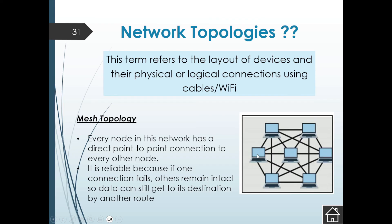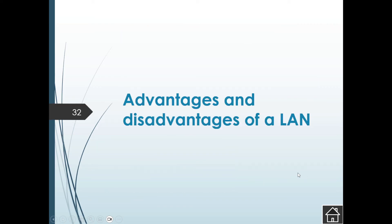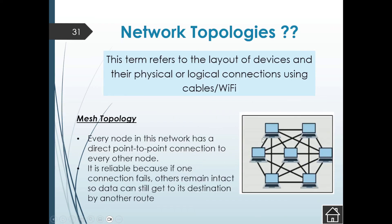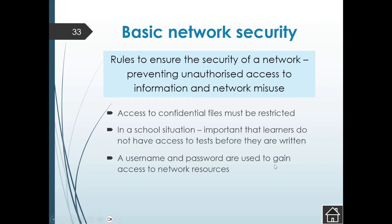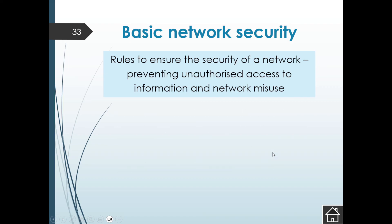The mesh topology means every node — every machine — in the network has a direct point-to-point connection to every other node. It is reliable because if one connection fails the data can still reach its destination by another route. These are the four topologies with their respective advantages and disadvantages.